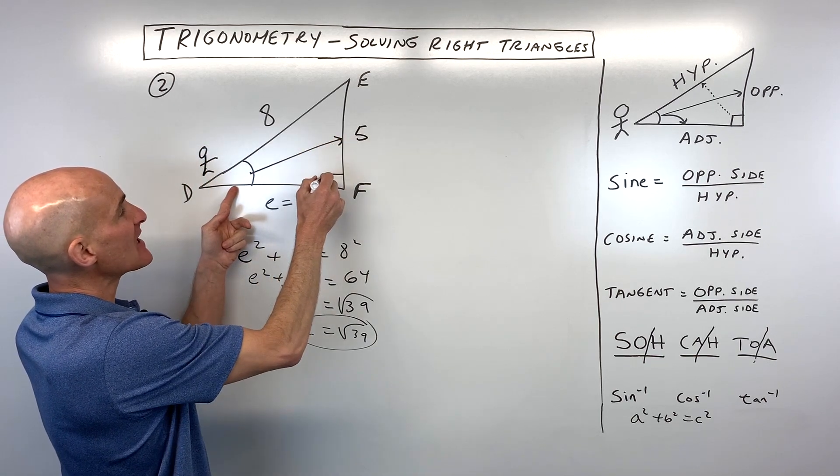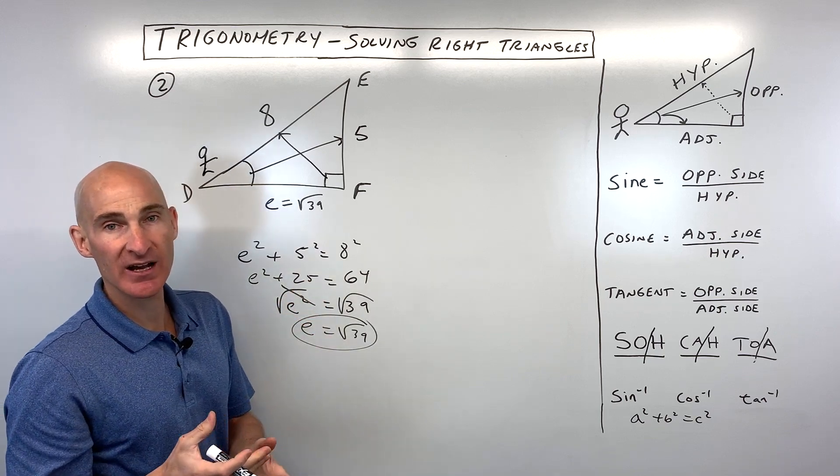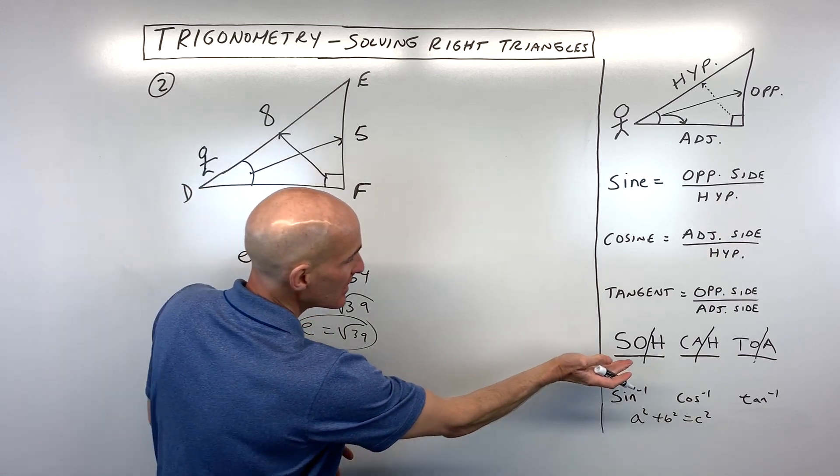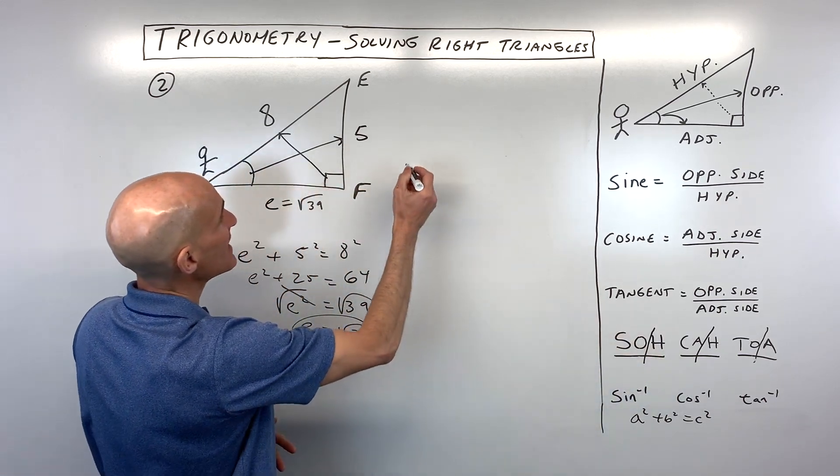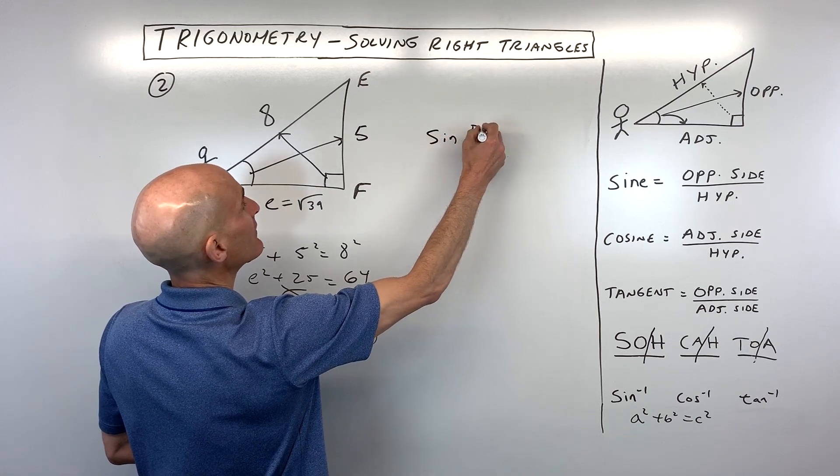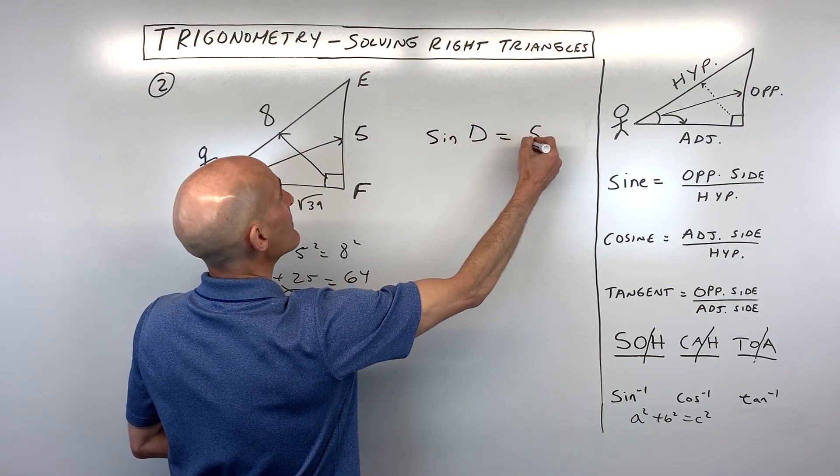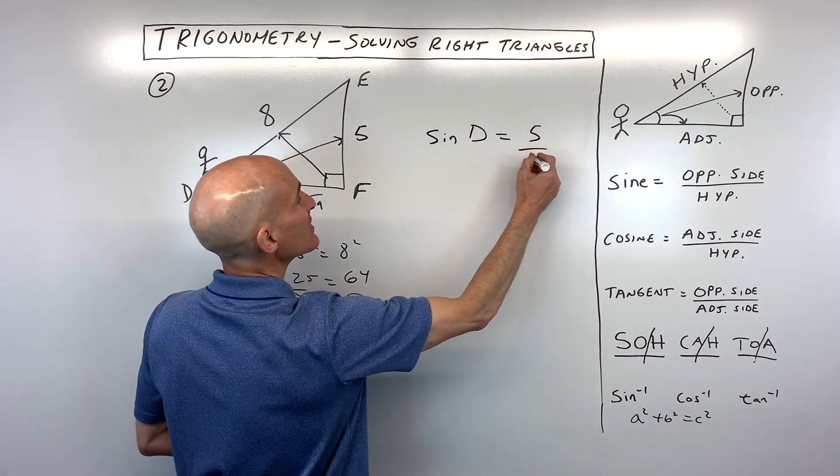So let's position ourself over here at angle D. We've got the opposite side, we've got the hypotenuse. Which trig function ties together opposite and hypotenuse? You can see that SOH or sine. So we have the sine of angle D equals opposite, which is 5, over hypotenuse, which is 8.